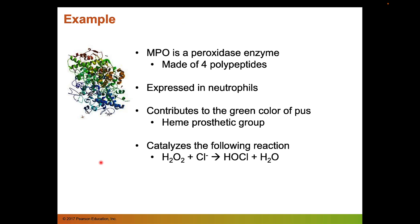My favorite enzyme is myeloperoxidase, or MPO, and it's a peroxidase enzyme. It's made up of four polypeptides, so what you're looking at is its quaternary structure. MPO is expressed specifically in a cell called a neutrophil, which is a type of white blood cell. One of the reasons it's interesting is because it contributes to the green color of pus. This enzyme binds to a small molecule called heme, and when it binds, it actually forms a covalent bond with heme, giving the heme unique spectral properties that turn it green.